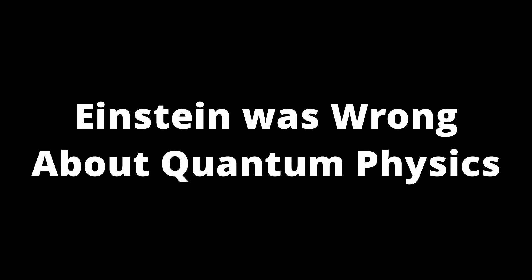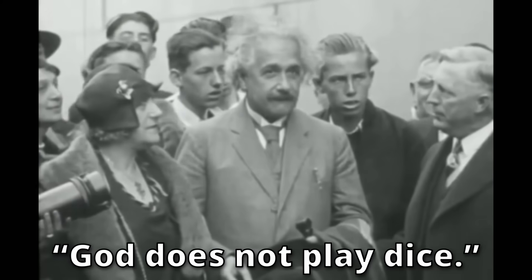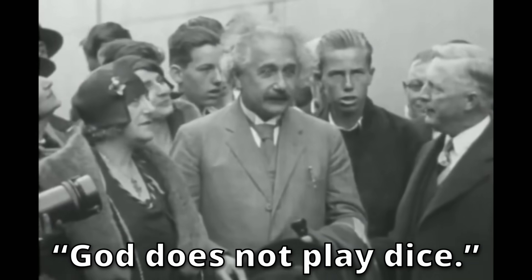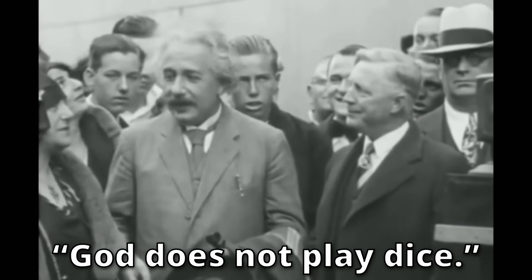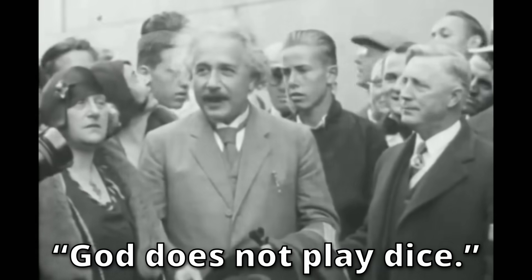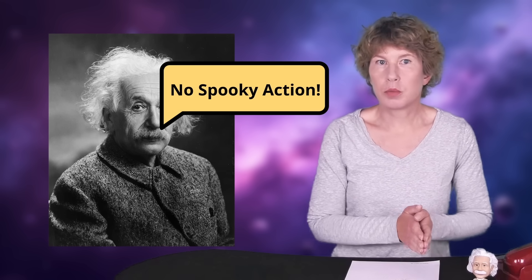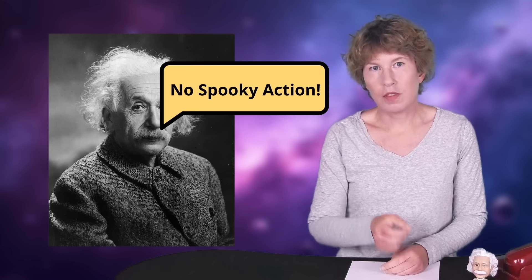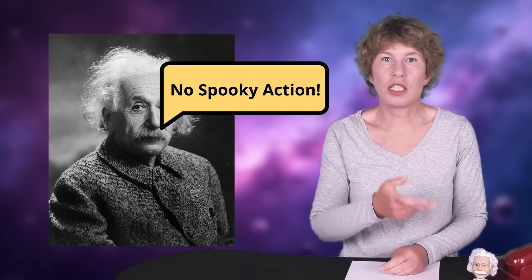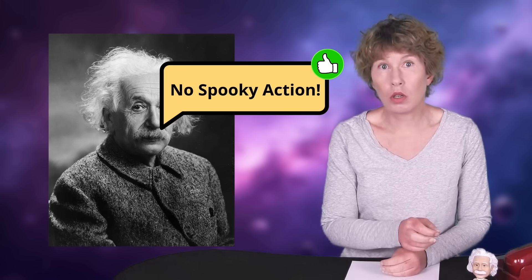Einstein was wrong about quantum physics. People who say this usually don't know what Einstein said in the first place. His famous remark that God doesn't play dice was, for one thing, clearly a joke, but also it's impossible to prove that the world is either deterministic or indeterministic, so this statement will never be shown to be either true or false. What Einstein did say about quantum mechanics is that he didn't believe that the collapse of the wave function is a physical process. This collapse is what he called a spooky action at a distance, because it happens faster than light. There is to date no experiment that shows that the spooky action is actually physically real. So no, Einstein's beliefs about quantum physics have never been shown to be wrong.